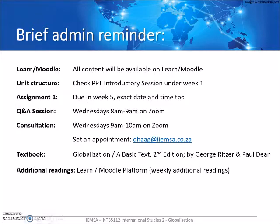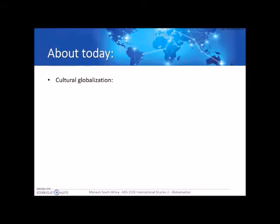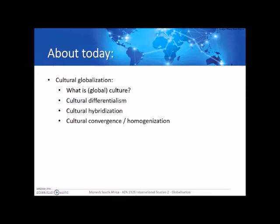Now let's get started. We're going to look at cultural globalization and start by asking: what is culture? If we talk about cultural globalization, what do we understand by culture? What do we understand by global culture — is there even such a thing? Then we're going to look at three theories of how cultural globalization is evolving: cultural differentialism, cultural hybridization, and cultural convergence, also called homogenization.